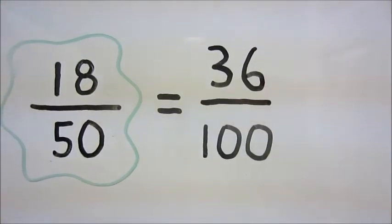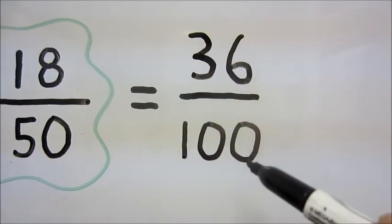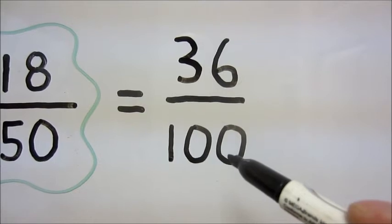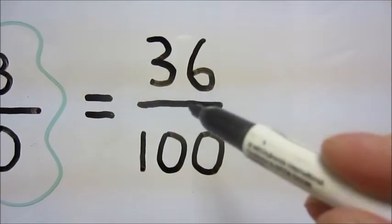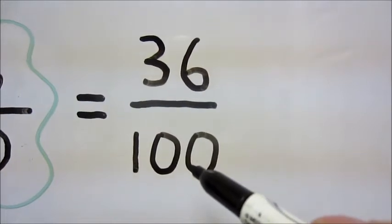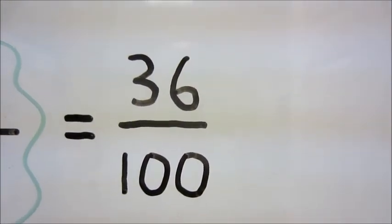Now as we saw in our last video, we have a new fraction 36 over 100. 100 is our denominator. All we have to do now is remove the fraction bar and the denominator of 100, add our percent sign for a final answer of 36%.